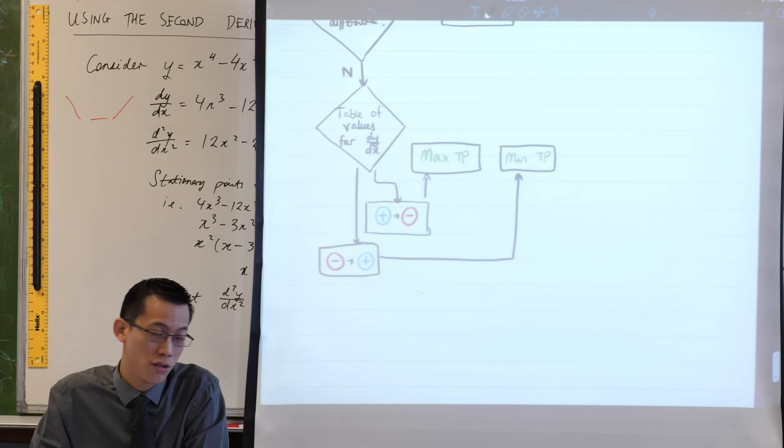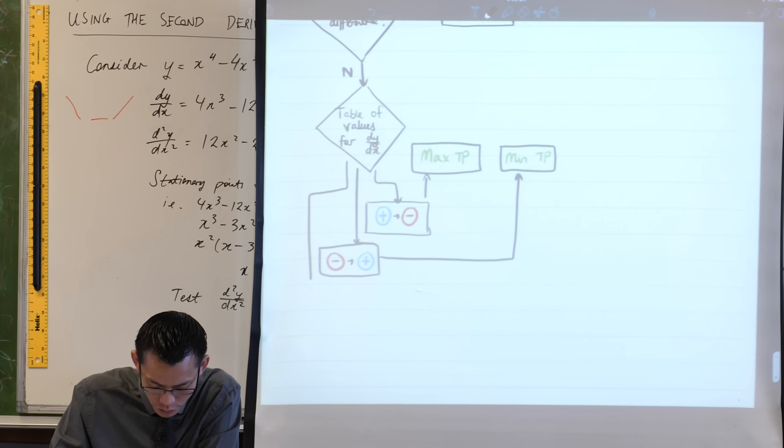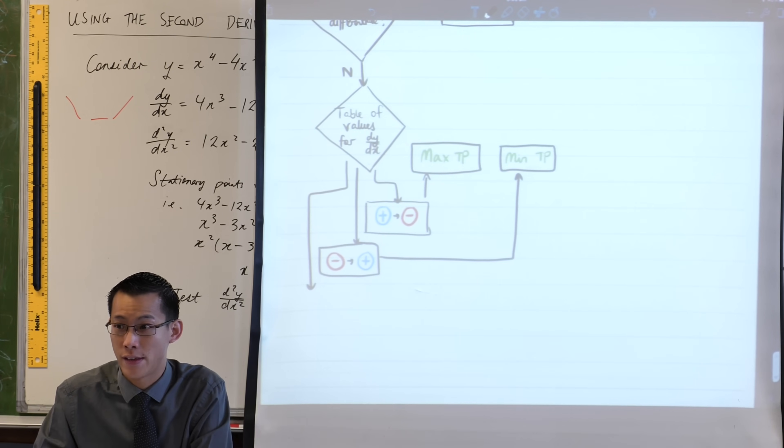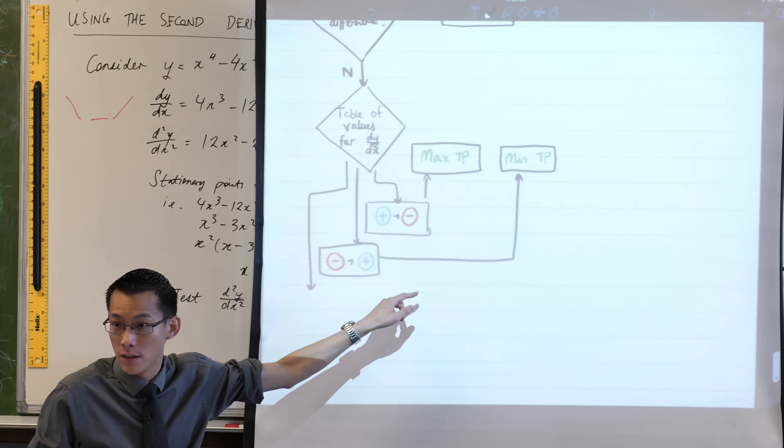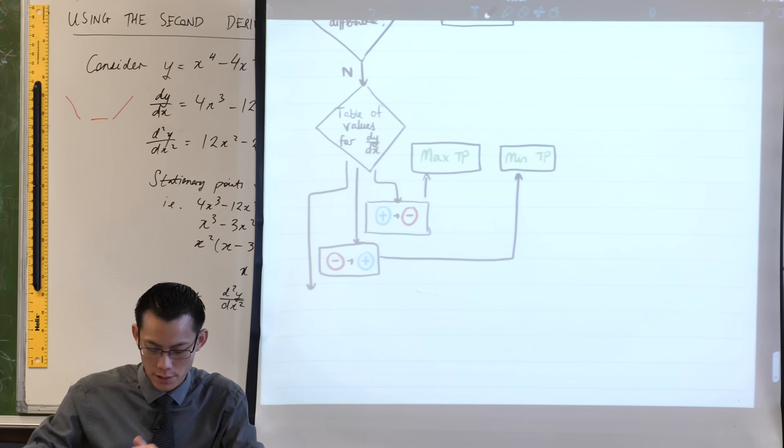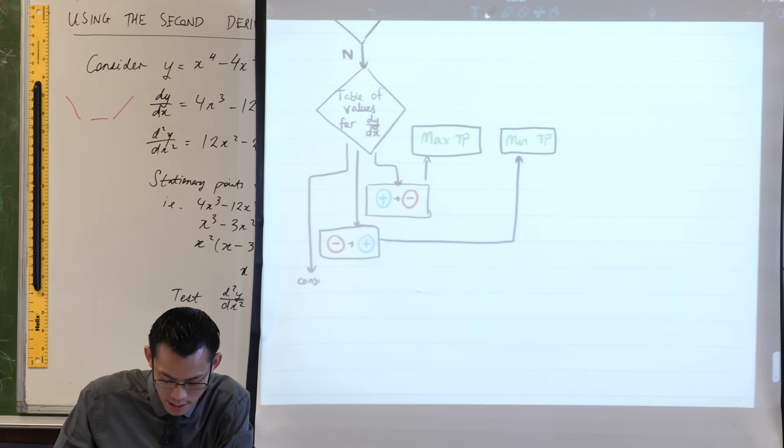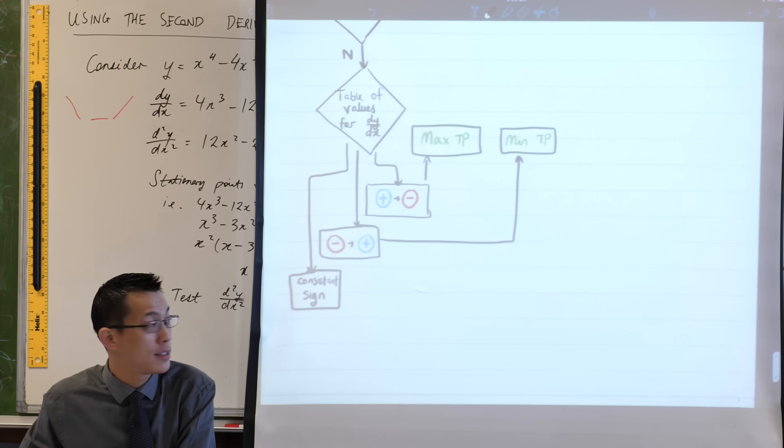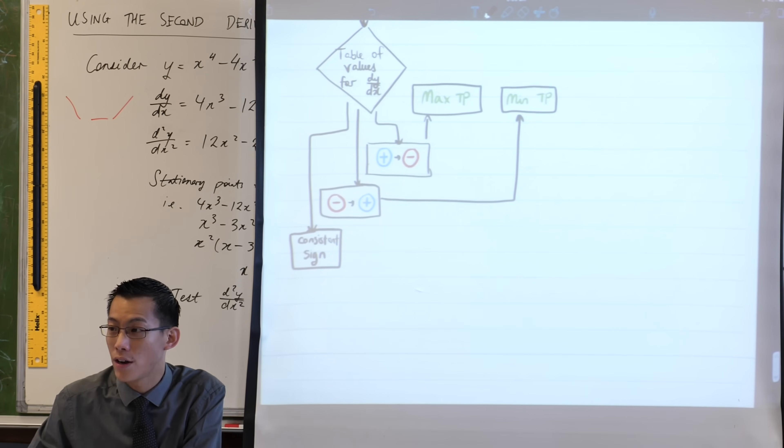But of course there is one last alternative, because you don't have to have a max or a min. It could, after all, be a horizontal point of inflection. What does your table of values look like if you do have a horizontal point of inflection? The answer is there's no change in sign, not positive to negative or negative to positive. You have a consistent sign on both sides. Consistent sign, positive to positive or negative to negative.